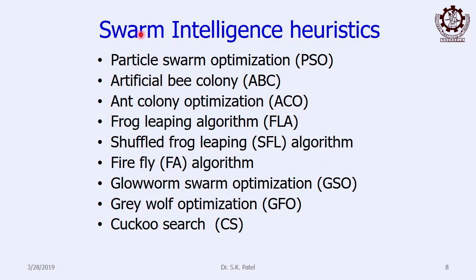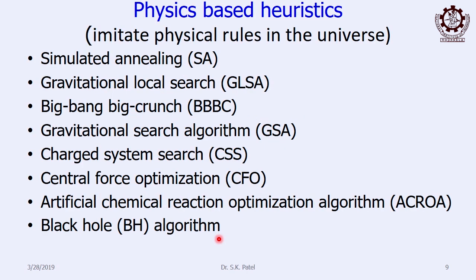Next is swarm intelligence heuristics. Under these, the groups include particle swarm optimization, artificial bee colony optimization, ant colony optimization, frog leaping algorithm, and many more. Various methods are there, so you should not be surprised whenever you hear such technique names — at least be aware that these names exist. These will be uploaded in your module. At least one technique you have to write a short note on and submit — search in Google and write a short note on at least one technique.